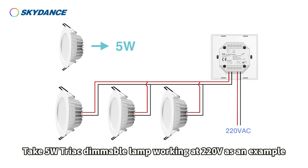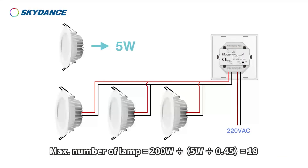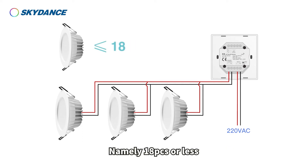Take a 5-watt triac dimmable lamp at 220 volts as an example. Max number of lamps equals 200 watts divided by 5 watts divided by 0.45, which equals 18. Namely 18 pieces or less.